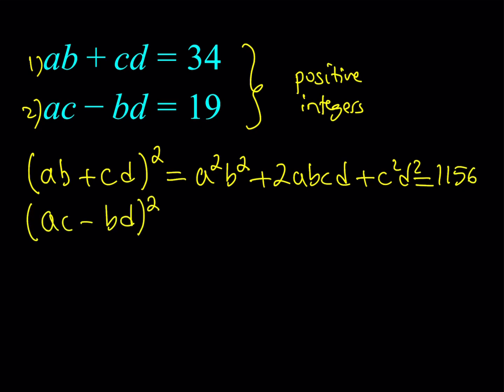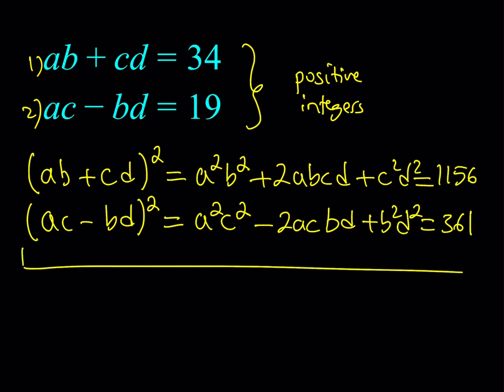If I square the second one, notice that one has a plus sign, the other has a minus sign, and that's critical. I'll get A²C² minus 2ACBD, which is the same as 2ABCD by the way, plus B²D². And 19 squared, as you know, is 361.